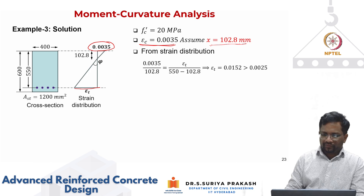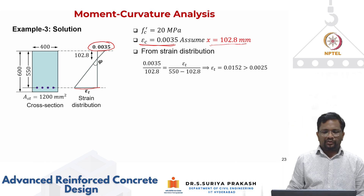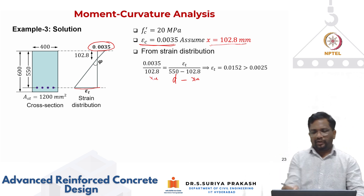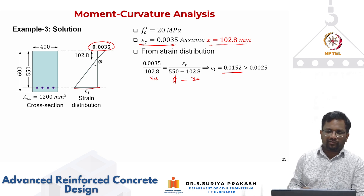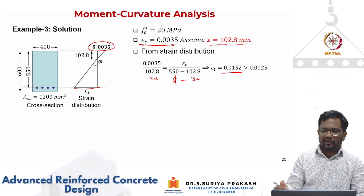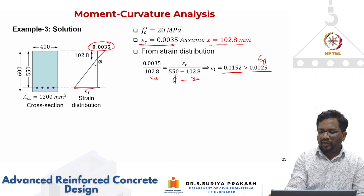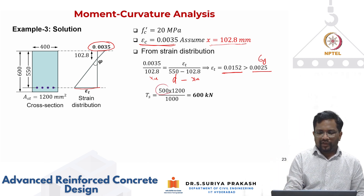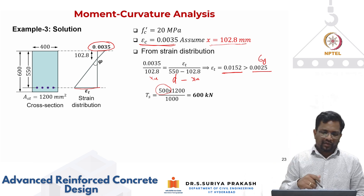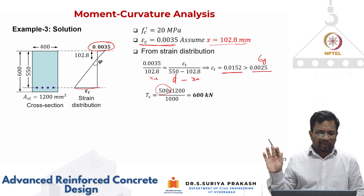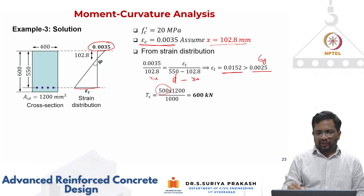From similar triangles: 0.0035 divided by x_u equals epsilon_t divided by (d minus x_u). We can calculate epsilon_t, and even for a concrete strength of 20 MPa at ultimate, the strain in the steel is 0.0152 — much larger than the yield strain of 0.0025. So the steel is yielding, and the stress in the steel is taken directly as 500 MPa, because we use a bilinear elastic perfectly-plastic model.